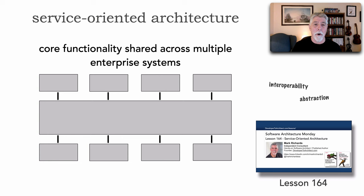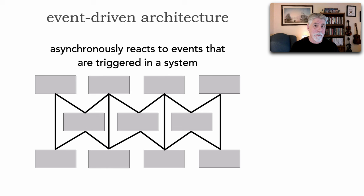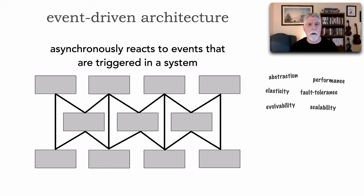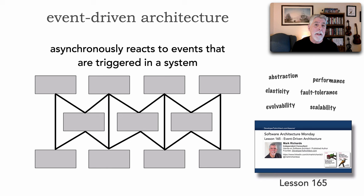Next is event-driven architecture. This architecture style has a shape that asynchronously reacts to events triggered within the system. Contributing to this shape are high levels of abstraction, performance, elasticity, scalability, fault tolerance, and the ability to evolve the architecture for frequent change. You can get more information in lesson 165.